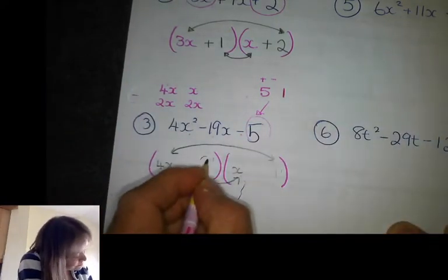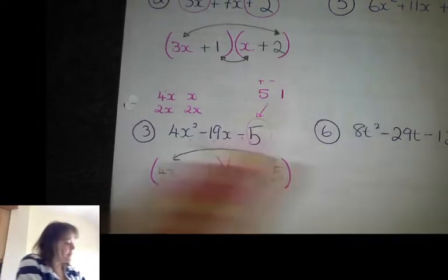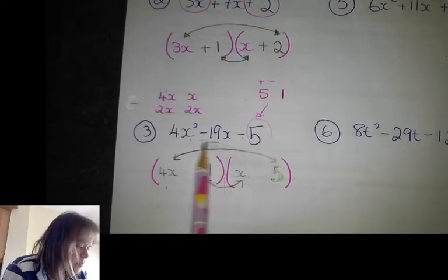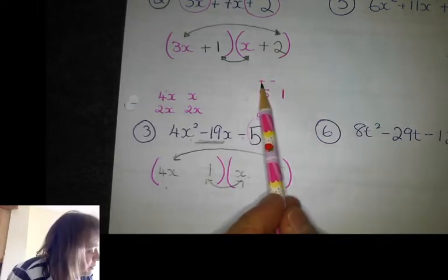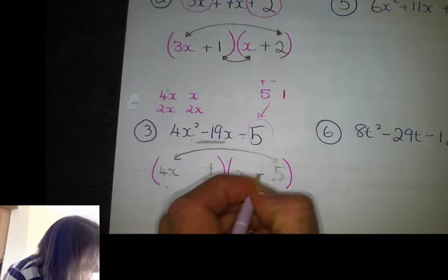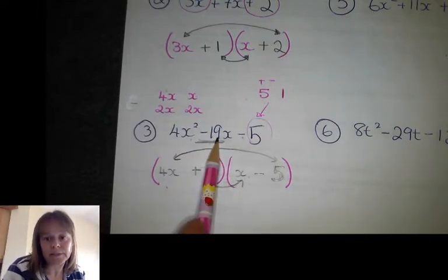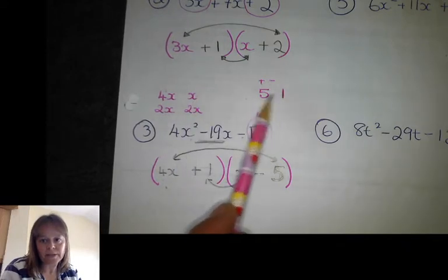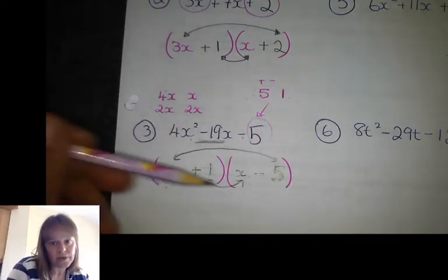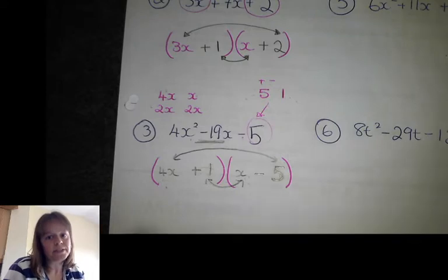I'll switch around and try the one and the five the other way: one times x makes 1x, five times 4x makes 20x. That looks more promising because I'm trying to make minus nineteen. If I make this one minus 20x and this one plus 1x, that gives me the minus nineteen I wanted. I was lucky — I picked this option and found one that worked. If neither way around had worked, I'd have had to move on to try 2x in both brackets.